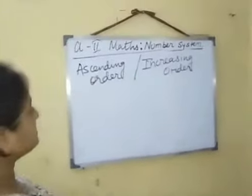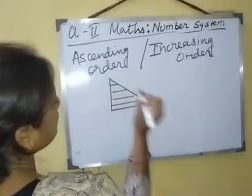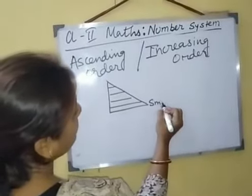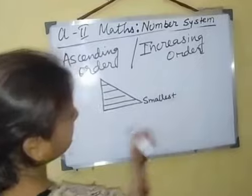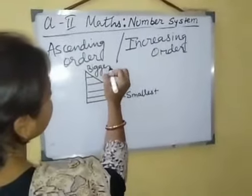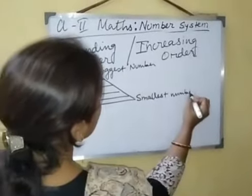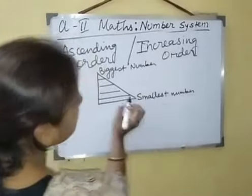Let me show you one example. This is the staircase. Here at the bottom is the smallest number, and here is the biggest number. So in the staircase, what do we do? We move from down to up. So starting from the smallest number, we gradually move to the biggest number. This is the ascending order.